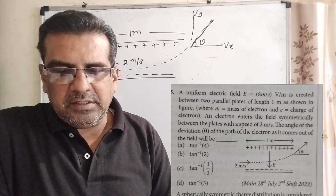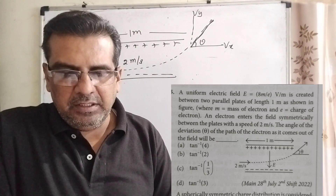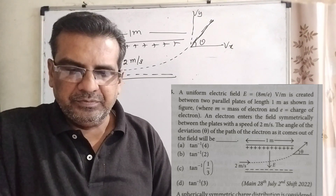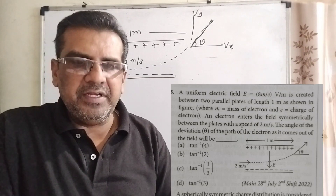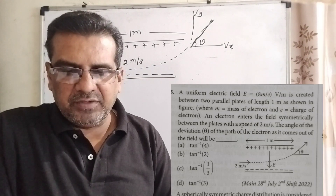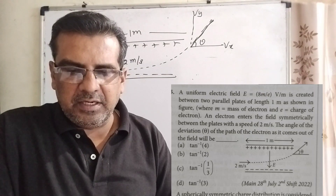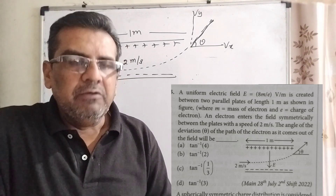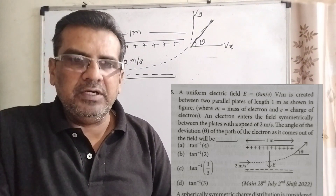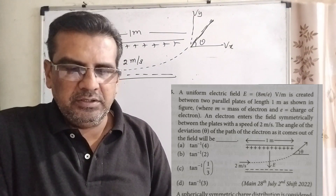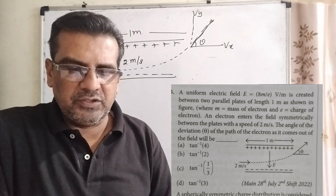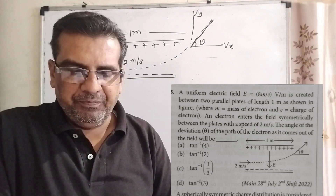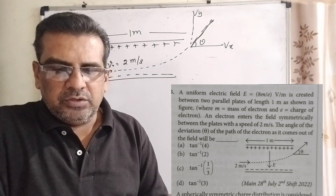An electron enters the field symmetrically between the plates with a speed of 2 meters per second. The angle of deviation theta of the path of the electron as it comes out of the field will be — you have four options: first, tan⁻¹(4); second, tan⁻¹(2); third, tan⁻¹(1/3); fourth, tan⁻¹(3). This question was asked in 2022 JEE Mains.